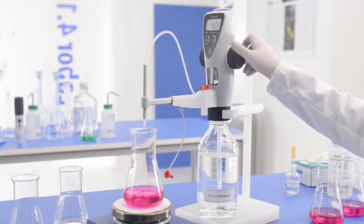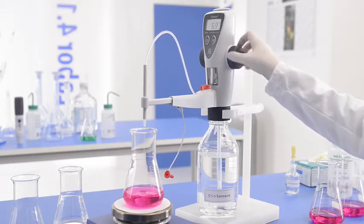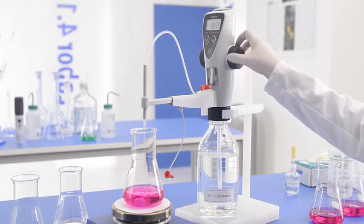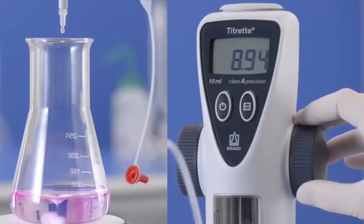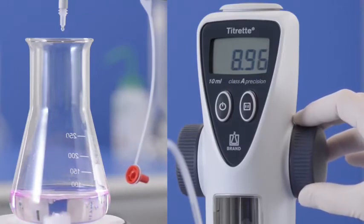If the approximate concentration is known, titration can proceed quickly until shortly before the end point. Then add the standard solution, drop by drop, until the color change.